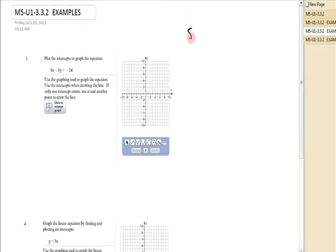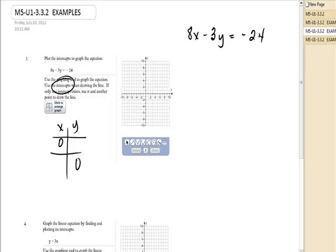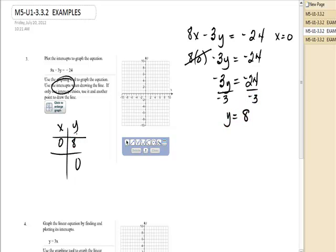I have 8x minus 3y is equal to negative 24. Because it says intercepts, I know that I'm going to let x be 0 and y be 0. So when x is 0, I have 8 times 0 minus 3y is equal to negative 24. 8 times 0 is 0, so I'm left with negative 3y is negative 24. Divide by negative 3, and y is 8. That is the point 0, 8.